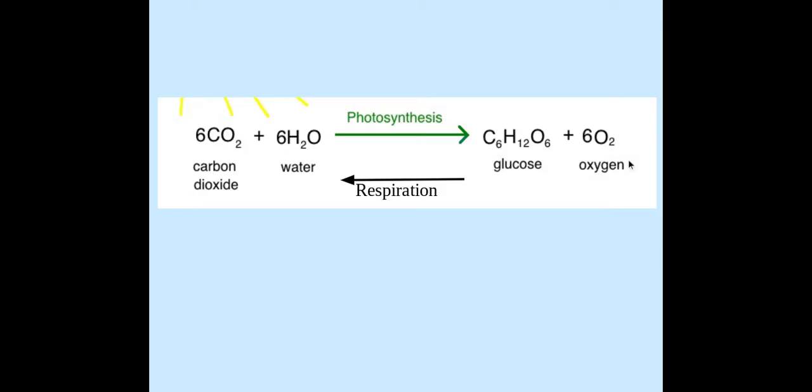In respiration we get oxygen from the atmosphere either diffusing into the stomata or breathed in, or it might just diffuse across the membrane whatever the organism is. We get glucose from our diet or from the breaking down of starch and it produces water and carbon dioxide which is breathed out or released.